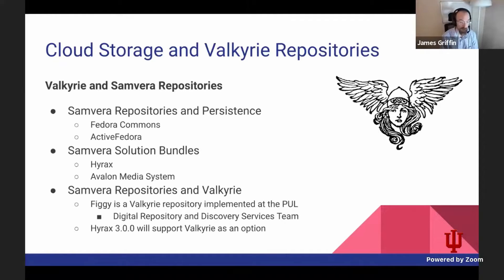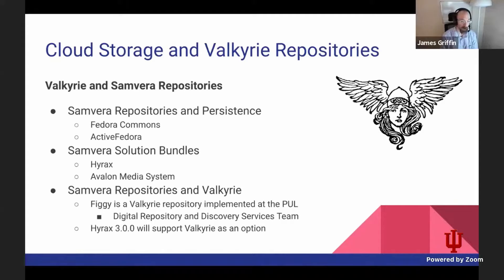The introduction of Valkyrie has introduced the possibility of exploring different pluggable storage backends. Within the Princeton University Library, we have a standalone Samvera repository not based off of these solution bundles — a custom Valkyrie-based implementation known as FIGGY, implemented by my colleagues and members of the digital repository and discovery services team. It should also be noted that Hyrax 3.0 will begin to support Valkyrie as an option for backend storage, but will also support Active Fedora to support those still using Fedora Commons.